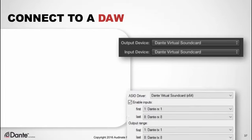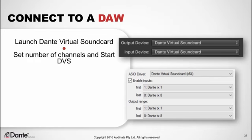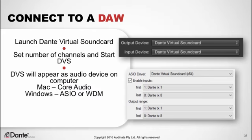When Dante Virtual Sound Card is turned on, it appears as a regular audio device on your computer, just like any hardware connected via USB. To connect it to a DAW, simply launch DVS, set the number of channels you want, and start it. On macOS, DVS appears as a standard Core Audio device. On Windows, Dante Virtual Sound Card supports ASIO — common for high-performance audio recording software — or WDM Windows drivers, common for consumer audio products like Windows Media Player. In your audio application, open audio preferences and choose Dante Virtual Sound Card from the list.